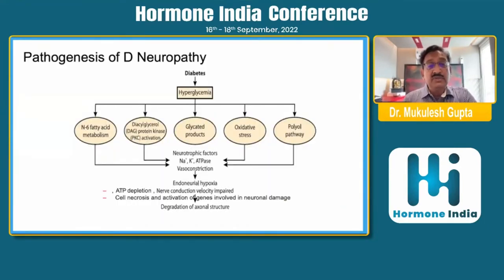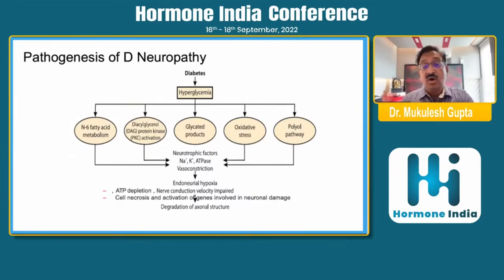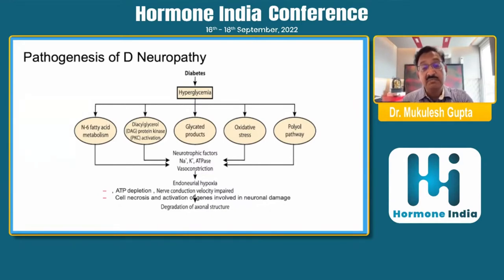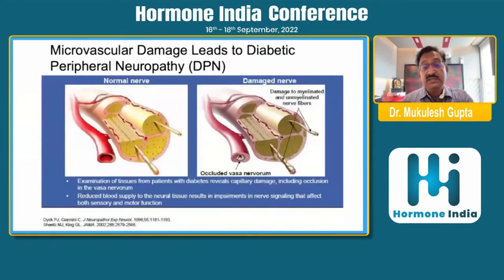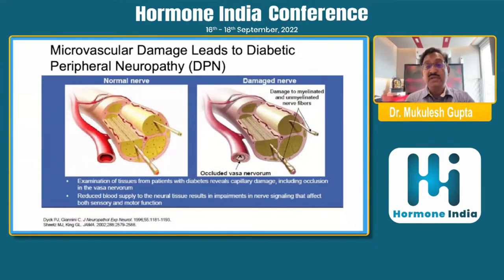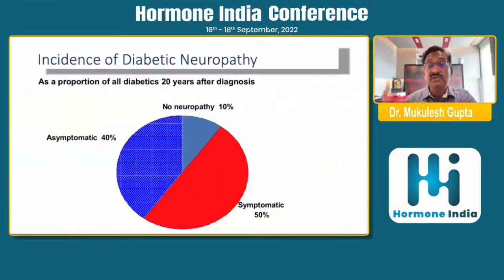Briefly going to the pathogenesis of Diabetic Neuropathy: it roots through hyperglycemia and various processes, including N-6 fatty acid metabolism, DAG or PKC activation, glycated products, oxidative stress, polyol pathways — all finally culminating into ATP depletion, nerve conduction velocity impairment, endoneurial hypoxia, and damage to nerve endings. Pictorically, we can see occlusion of the vasa nervorum, leading to damage to the myelinated and unmyelinated nerve fibers.